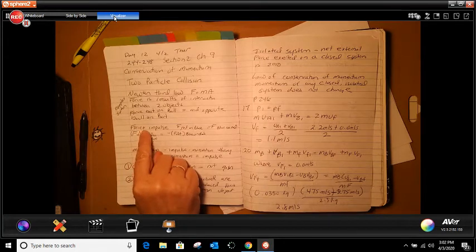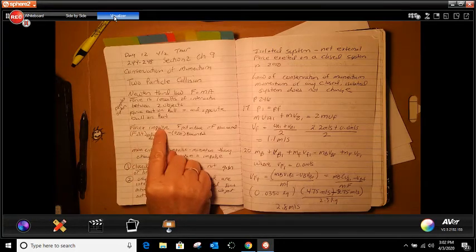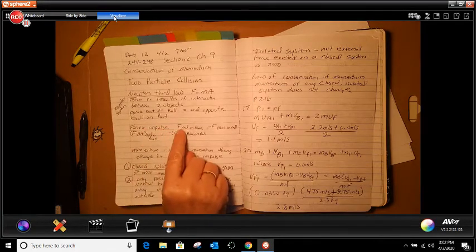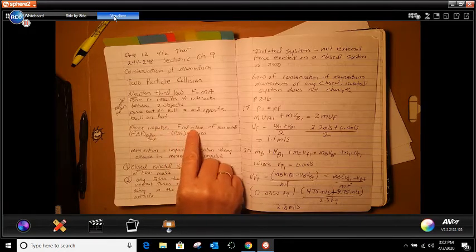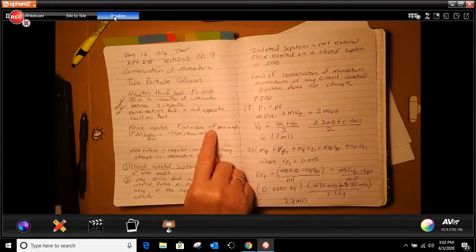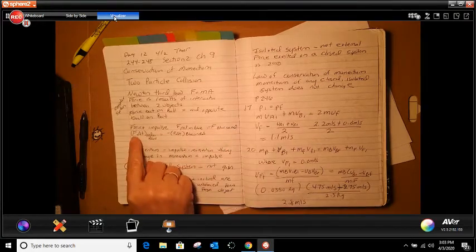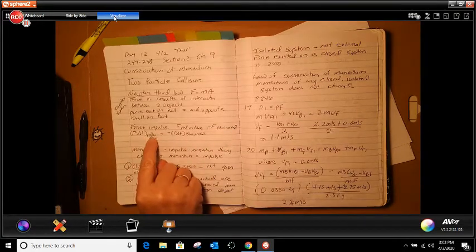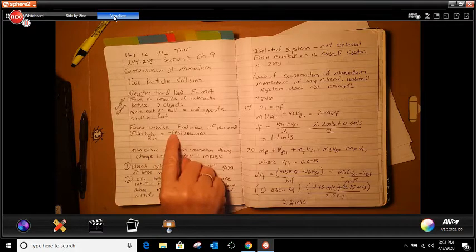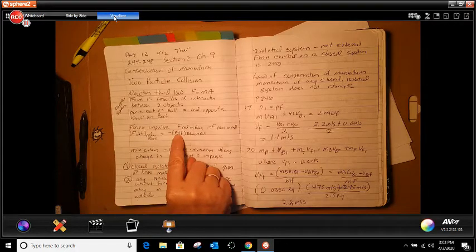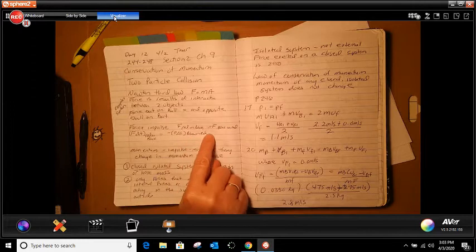Force plus impulse. And if we're looking for force impulse, we're looking for F red on the blue and negative F on the blue on the red. So we have force in a change in time on the red on the blue equals negative force in the change in time on the blue on the red.